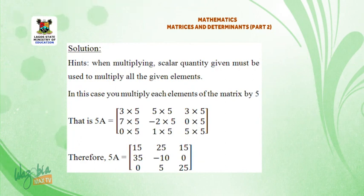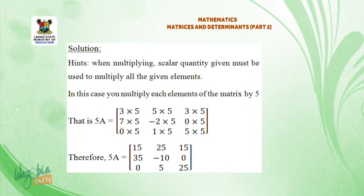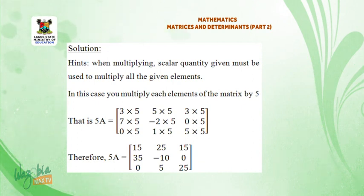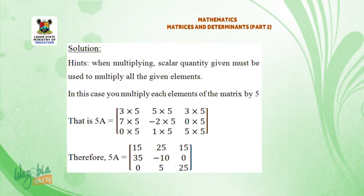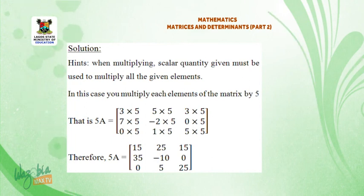That is, 5A is equal to the matrix: 3×5, 5×5, 3×5, 7×5, minus 2×5, 0×5, 0×5, 1×5, 5×5.